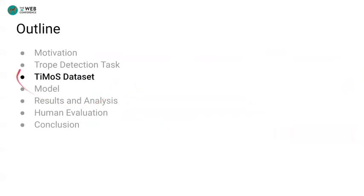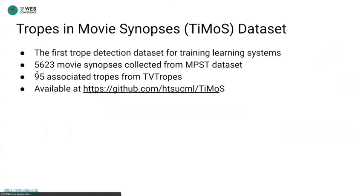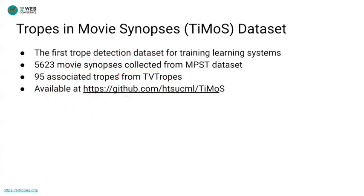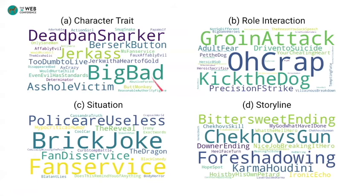Now I'm going to introduce our TIMS dataset. Our new dataset, Tropes in Movie Synopses, so-called TIMS, has 5,623 movie synopses from the MPST dataset, associated with 95 tropes collected from the TV Tropes database. The dataset is available on our GitHub page. We classify tropes into four categories, including character traits, role interaction, situation, and storyline.